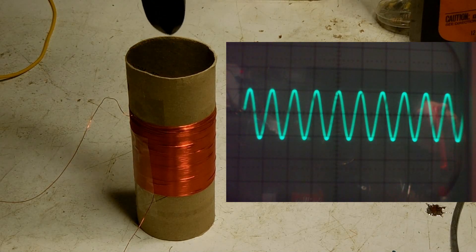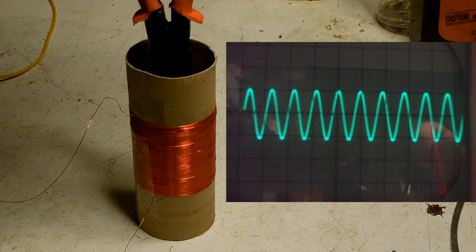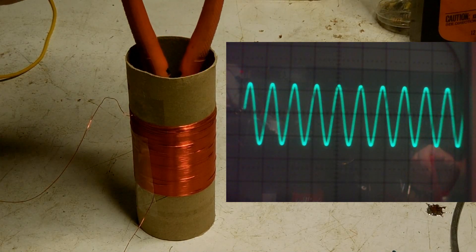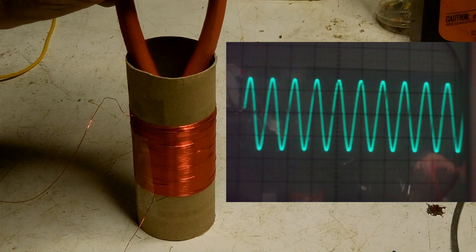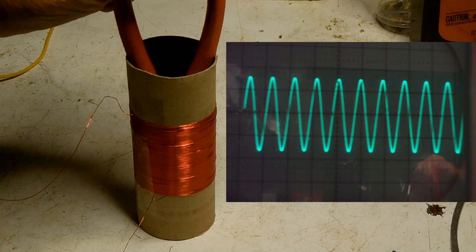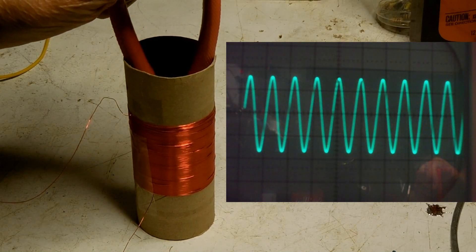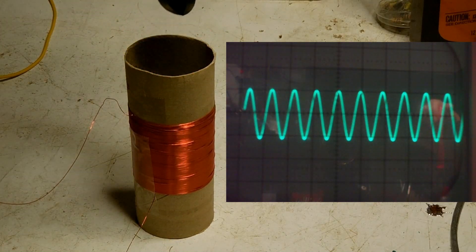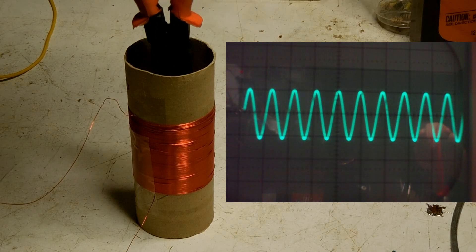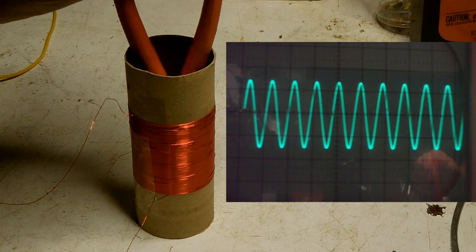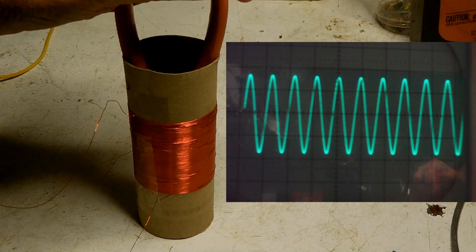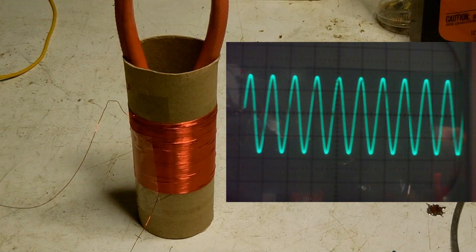And then when I remove the core, it goes back to what it was. So adding an iron core increases the impedance, or the AC resistance of a coil.